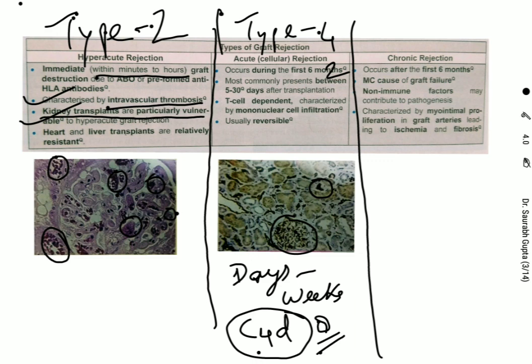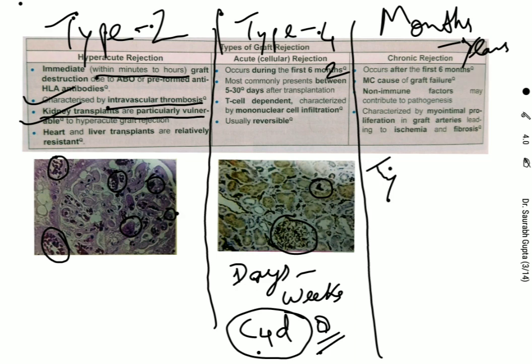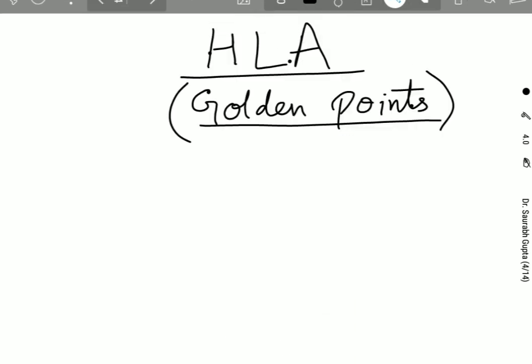In chronic graft rejection, the timeframe is months to years. It is mostly a Type 4 hypersensitivity, meaning a purely cellular reaction. Features include intimal thickening with inflammation, glomerulopathy, peritubular capillitis, interstitial fibrosis, and tubular atrophy. It is characterized by myointimal proliferation of the graft arteries leading to ischemia and fibrosis.